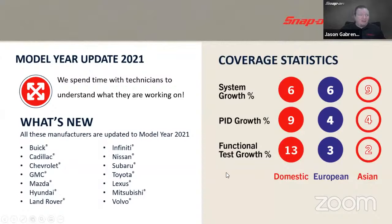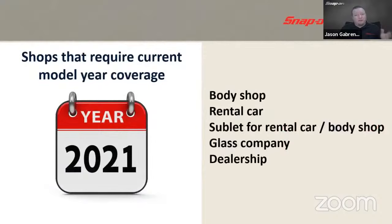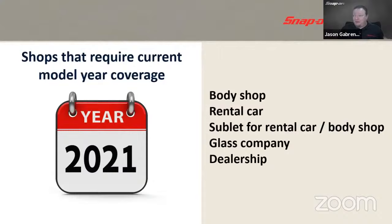You might think you won't see a 2021 model year vehicle, but there are shops that will. Think body shops and rental car facilities that scan cars across multiple makes. Think glass companies — a car with zero or one mile on it could get a broken windshield requiring recalibration or a pre/post-scan. And think dealerships, especially now that they're buying up used cars quickly because they're having trouble getting new ones. So 2021 coverage is useful.